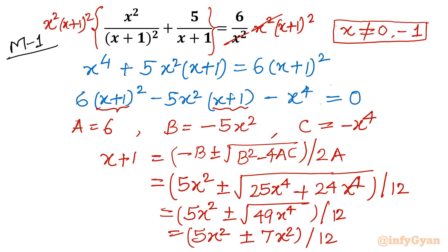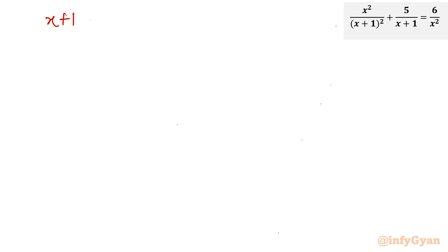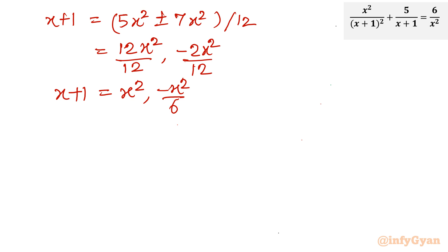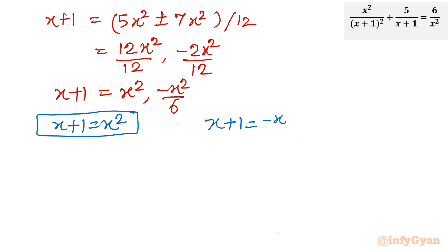The left-hand side is (x+1), not just x, since we treated the equation as quadratic in (x+1). Taking the plus sign: (5x² + 7x²)/12 = 12x²/12 = x². Taking the minus sign: (5x² − 7x²)/12 = −2x²/12 = −x²/6. So x+1 = x² or x+1 = −x²/6.